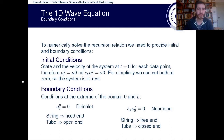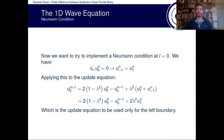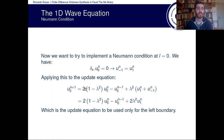Now let's implement the Neumann condition at the point l=0. We need to solve this derivative, and expanding the operator gives us the result. Applying this to the update equation we had before gives us the update equation to be used only when calculating the next state of the point l=0.